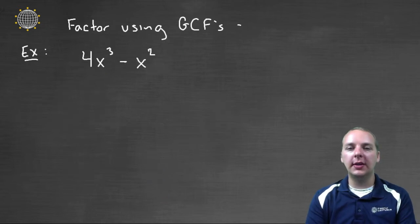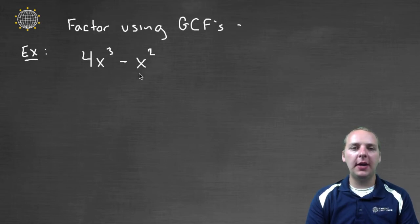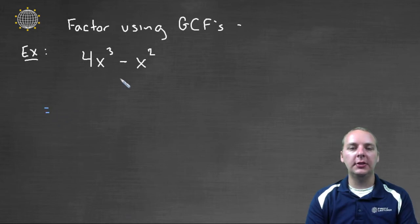Let's look at one last quick example. 4x³ - x². I see we have at least some x's in common. So I think we can factor using the GCF.